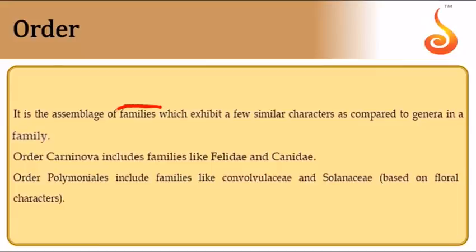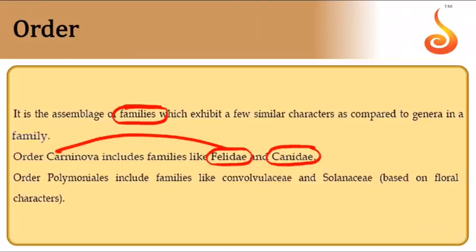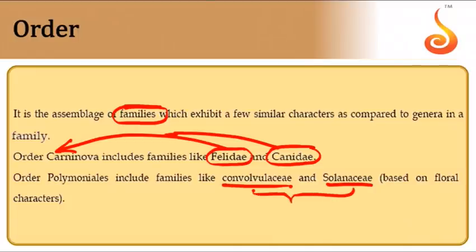Related families are placed in the same order. For example, the cat family (Felidae) and dog family are placed in order Carnivora. In plants, family Solanaceae and family Convolvulaceae share similarities in floral structures, so they are placed together in order Polemoniales.